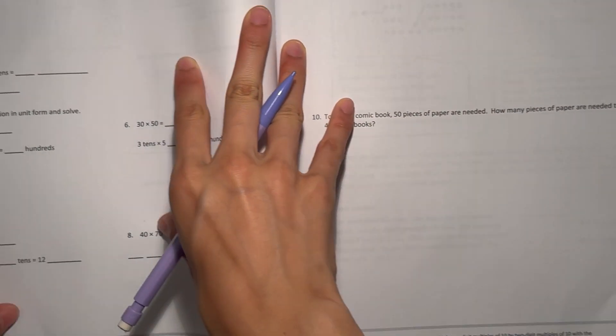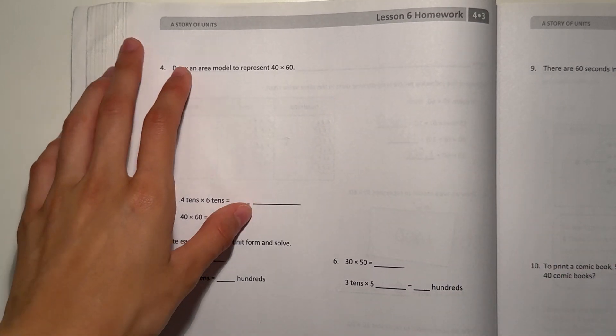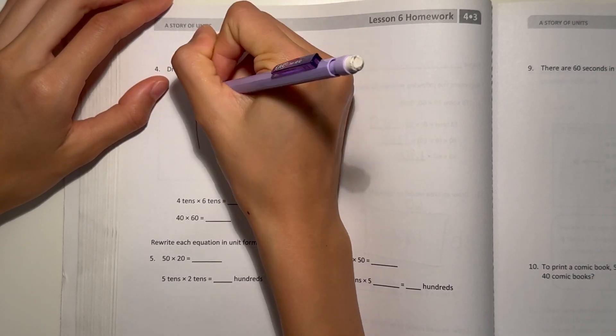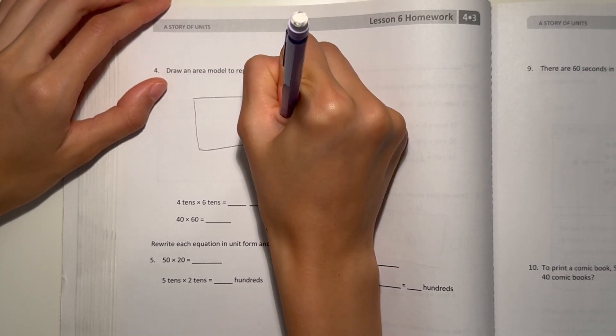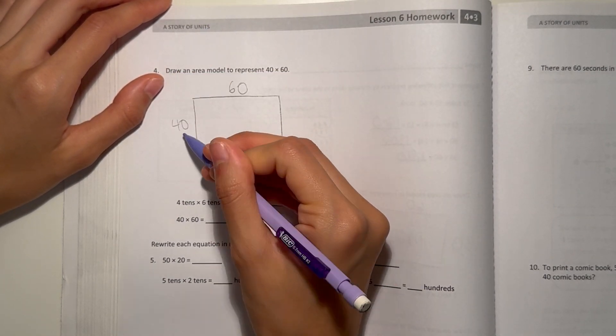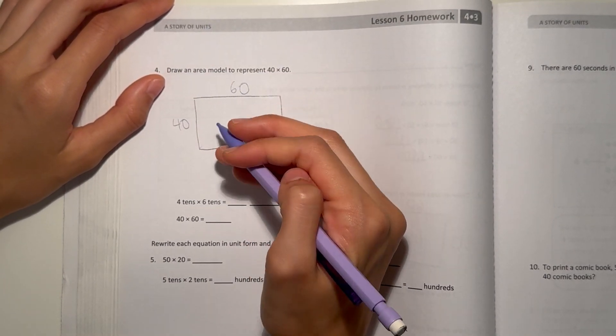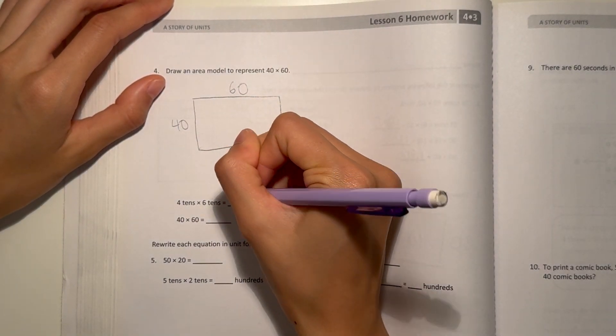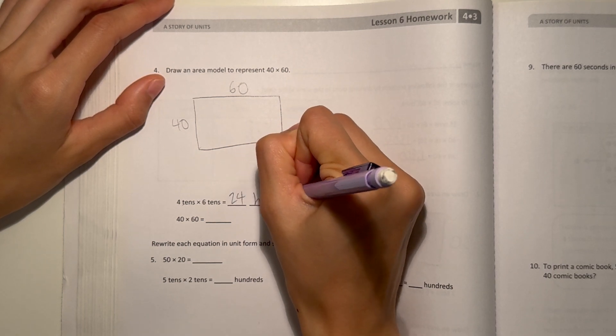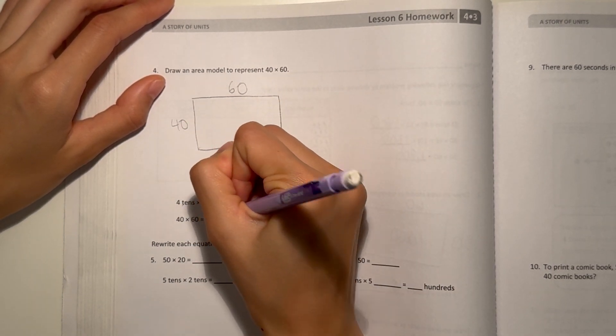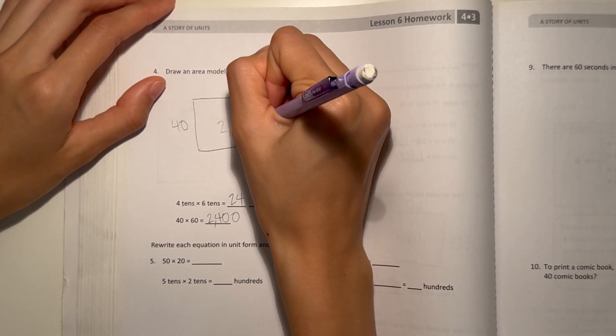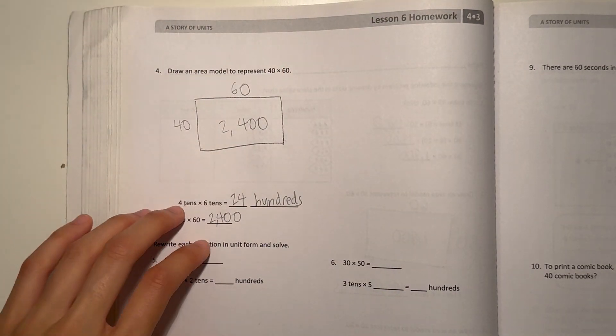Number four. Draw an area model to represent 40 times 60. Well, 40 times 60. Think of it as 4 tens, because 40 is 4 tens, times 6 tens. So that is 24. And 10 times 10 is 100. So it's 24 hundreds, which would be written as 24 with two zeros because of hundreds, so 2,400. 40 times 60 is 2,400.